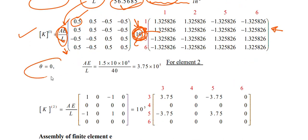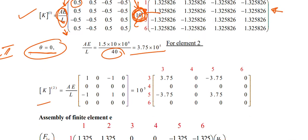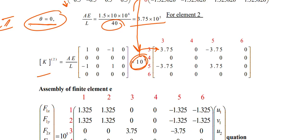For element 2, the angle is 0 degrees since it lies along the horizontal axis. AE/L = 1.5 × 10⁶ / 40 = 3.75 × 10⁵. Following the same procedure with cos 0 = 1 and sin 0 = 0, you substitute into the stiffness matrix and factor out 10⁵ outside. The final k2 matrix is obtained.